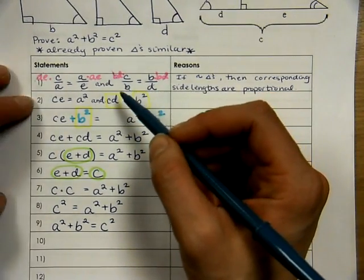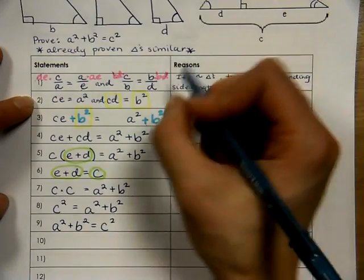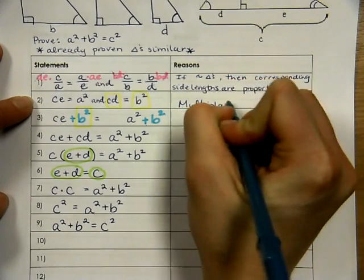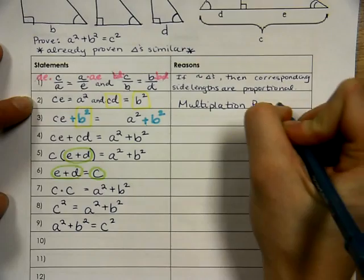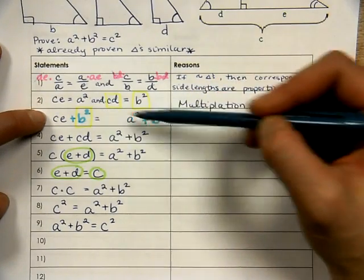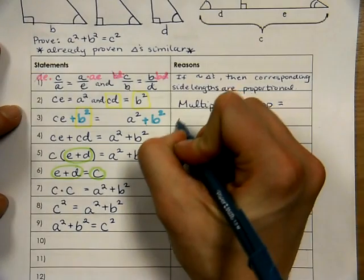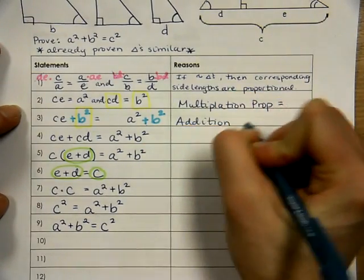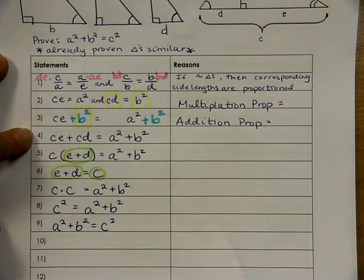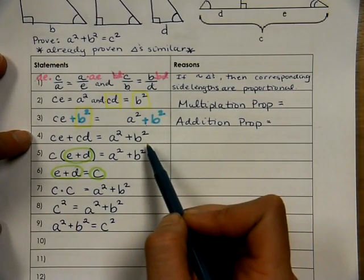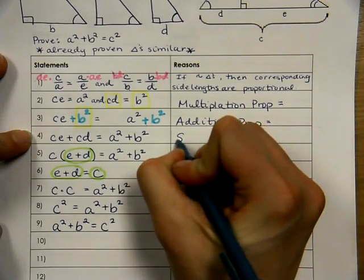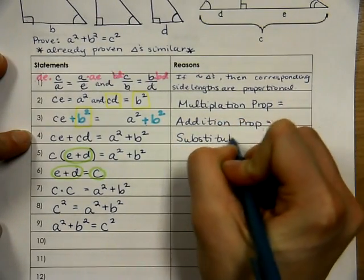So this was multiplication property of equality. From there, we had an equation that we added B squared to both sides. That would be our addition property of equality saying that if you have an equation, you can add the same value to both sides and it will still be equal. After that, we substituted in CD for B squared. So substitution property of equality.